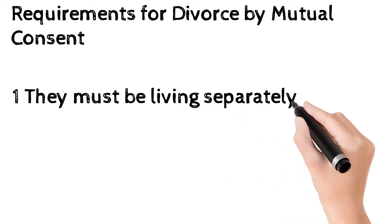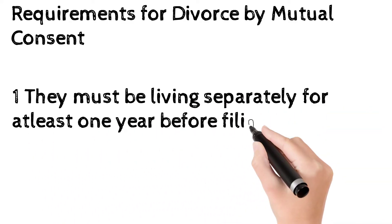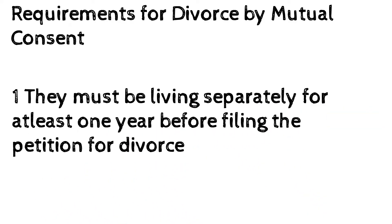The first condition is that the parties must have been living separately for a period of at least one year. This means that when they want to file a petition, they must already be living separately. For example, if they want to file a petition today, they should have been living separately for one year prior to that date.